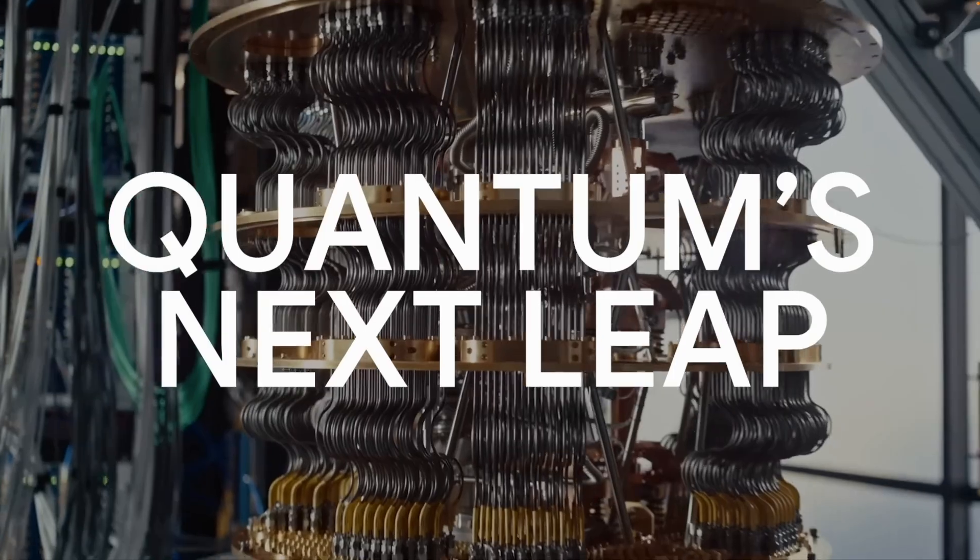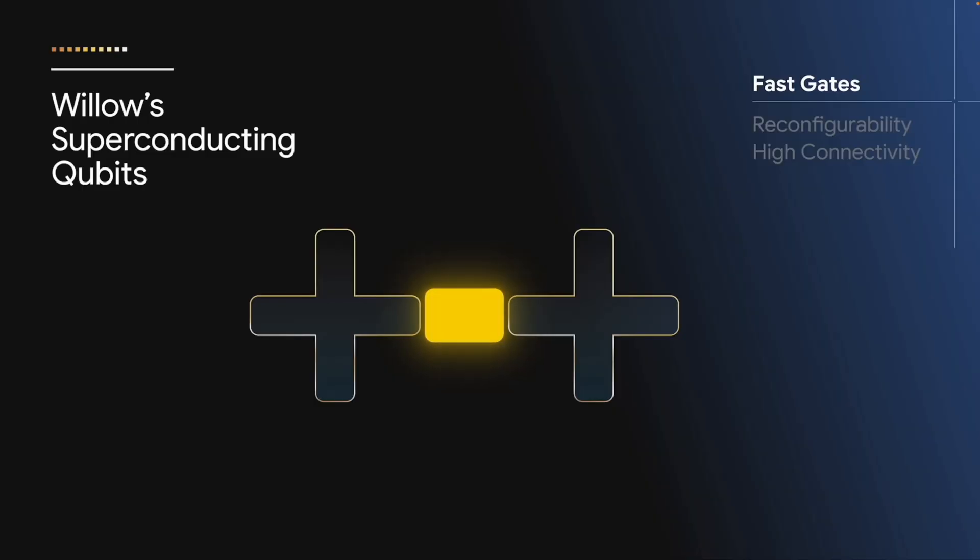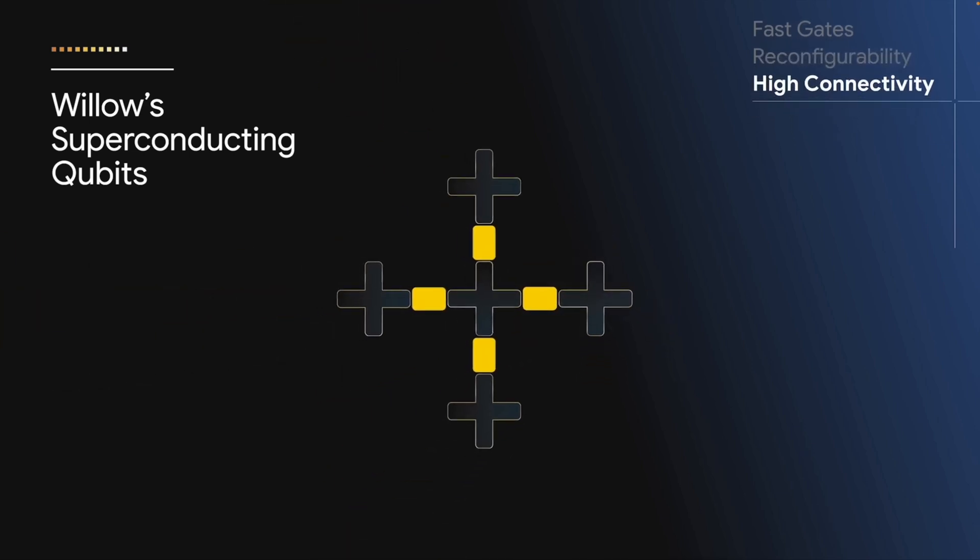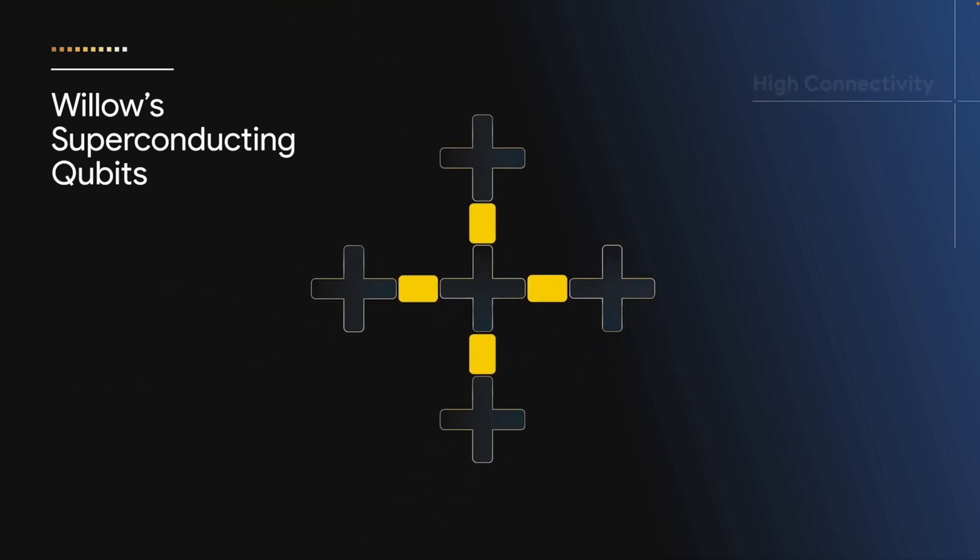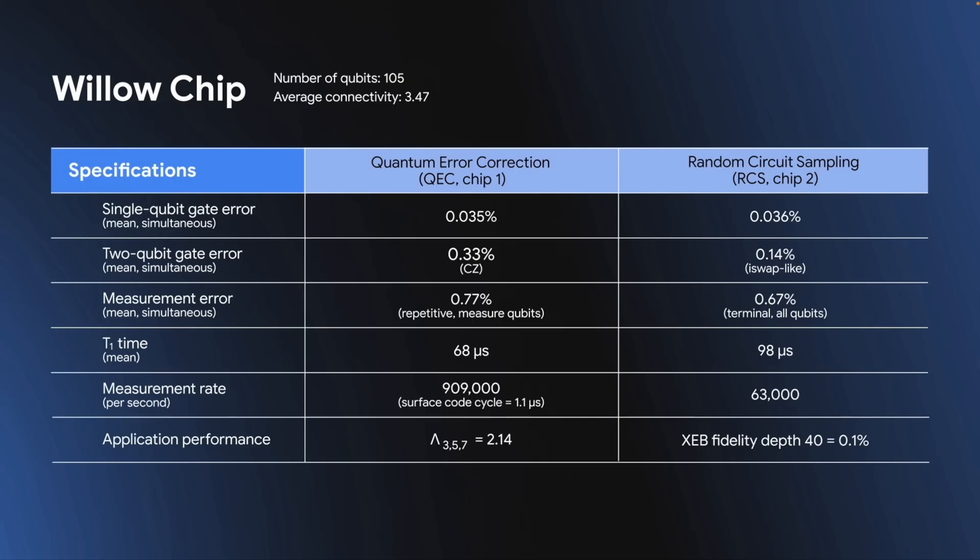Diving deeper into Willow's architecture, this 105-qubit processor employs superconducting qubits, which operate at cryogenic temperatures to maintain quantum coherence. The chip's design focuses on optimizing qubit connectivity and coherence times, crucial for executing complex quantum algorithms.